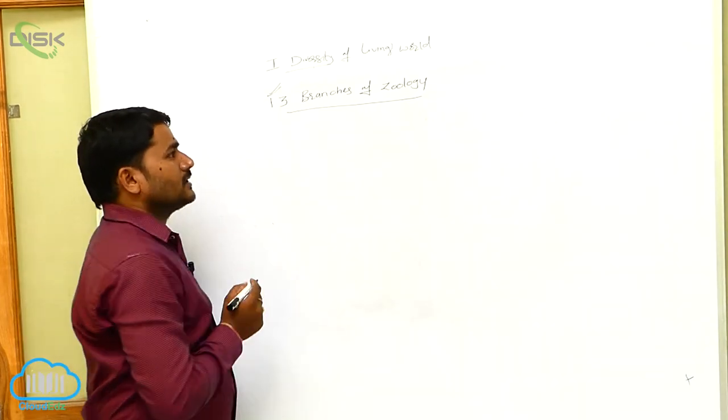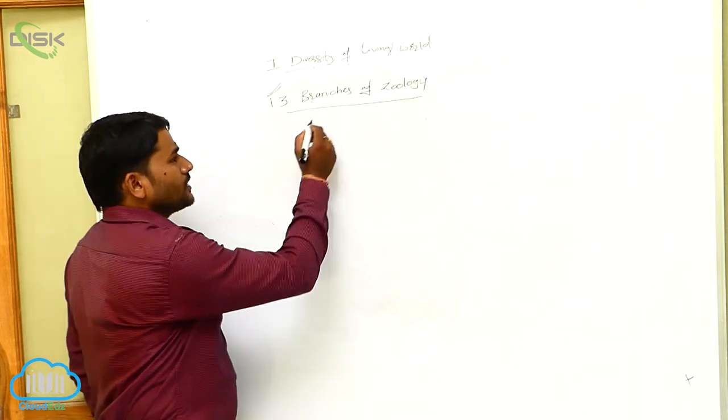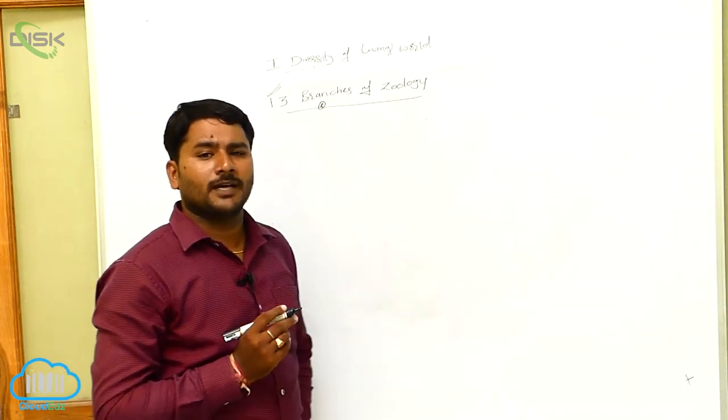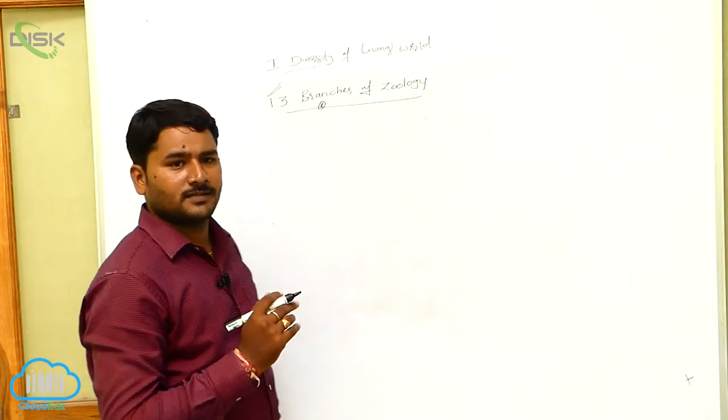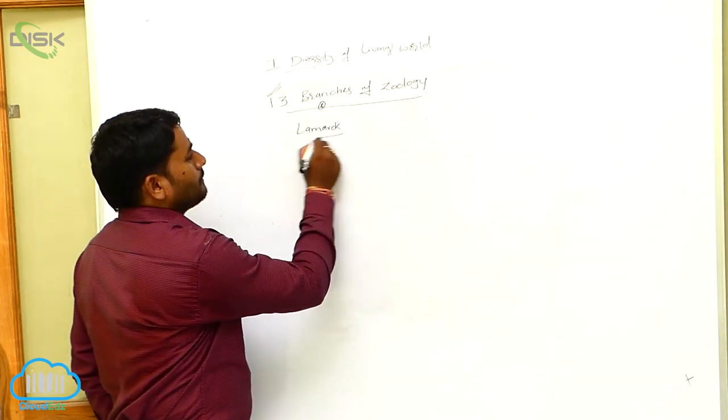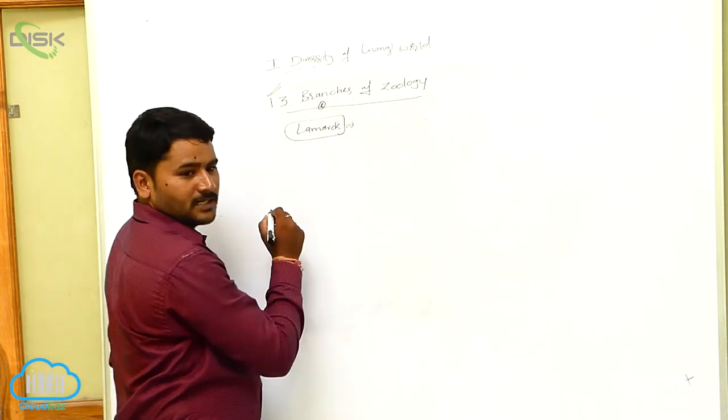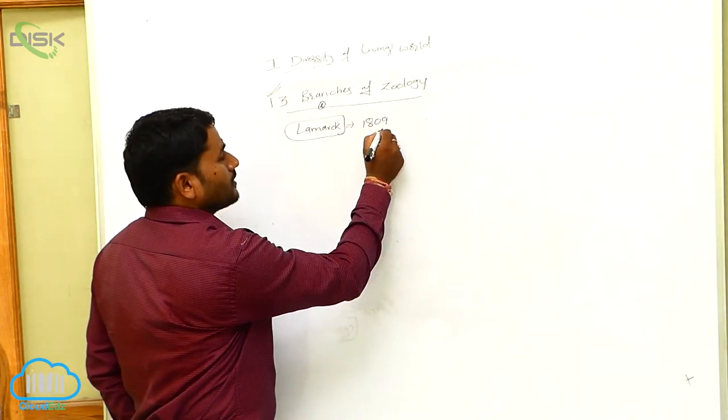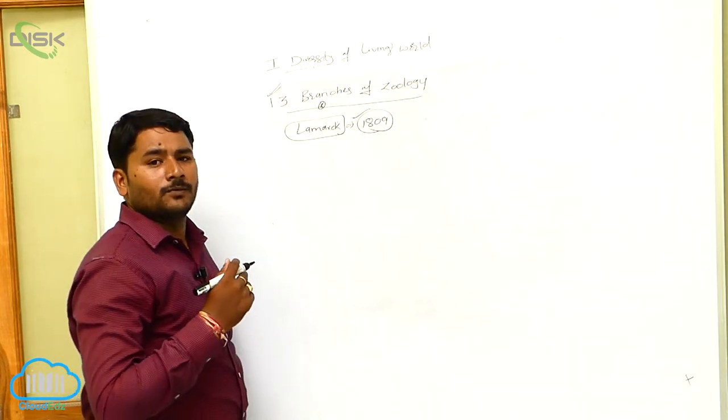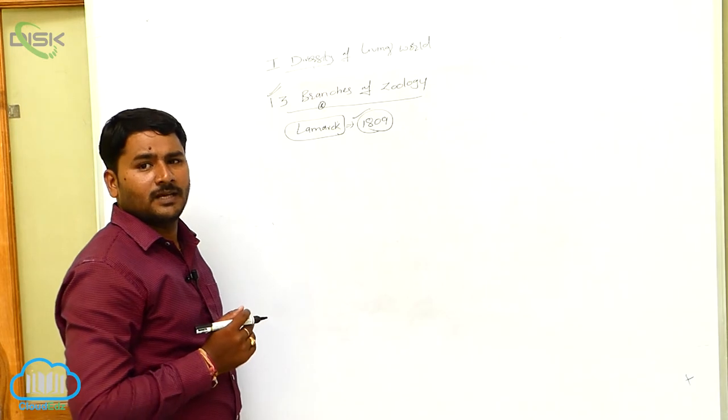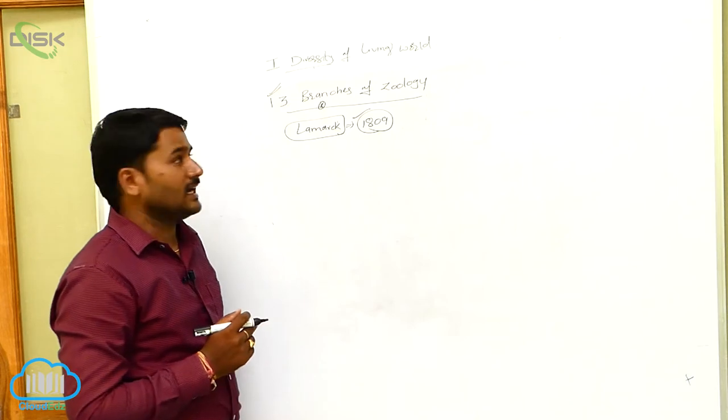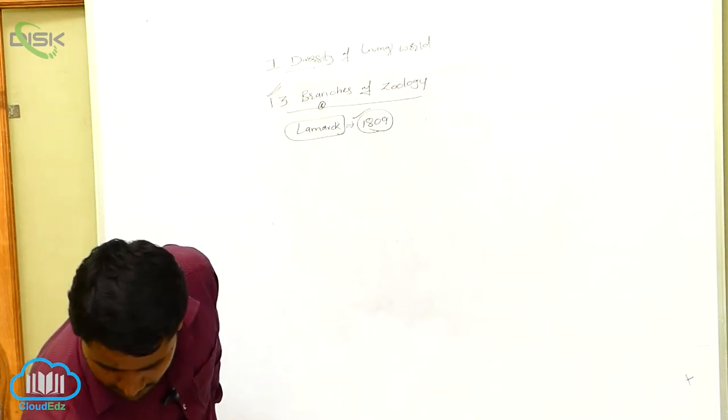Let us see now the branches of zoology. Before going to the branches of zoology, let's know the word of biology and who coined the biology. Generally, Jean Baptist Lamarck, a scientist, coined the word biology. Lamarck is the scientist who coined the word biology. Here in the zoology, which is a branch of biology, has so many branches in it.